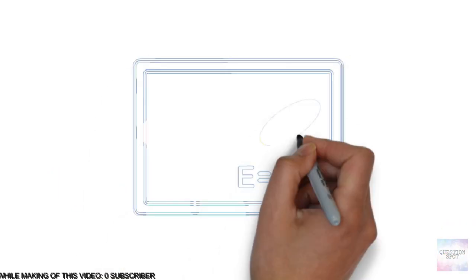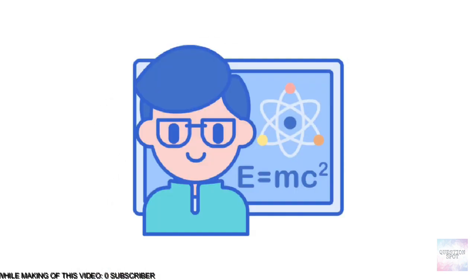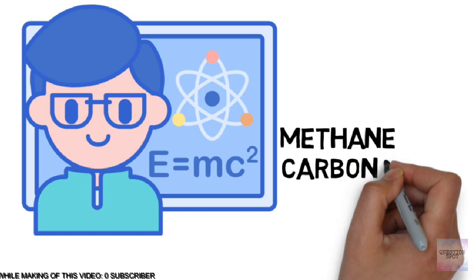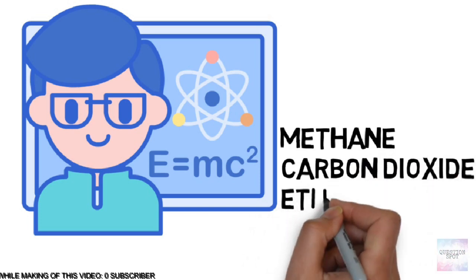Since childhood we studied that carbon can make 1, 2, and 3 bonds with other atoms. For example, methane, carbon dioxide, ethene, etc.